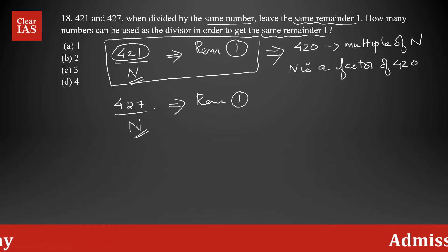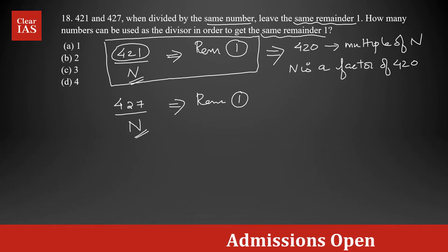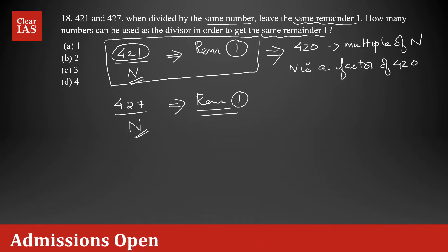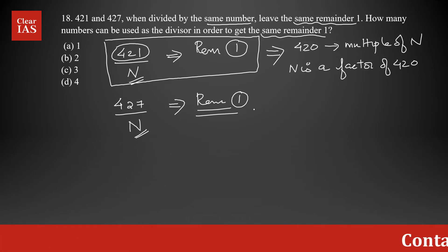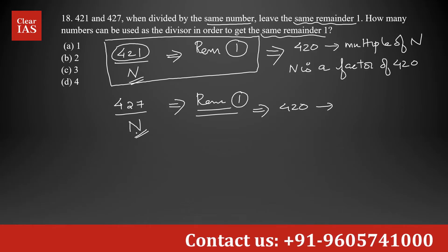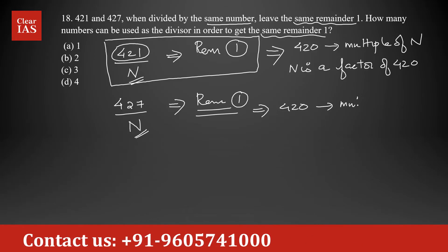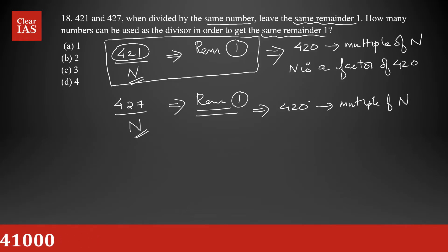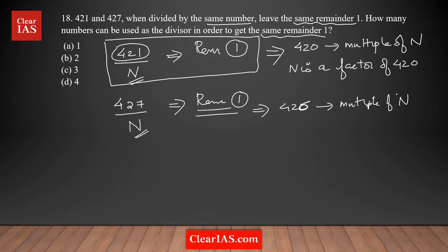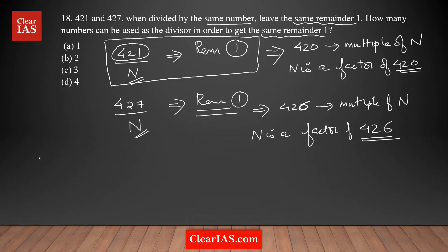Similarly, applying the same concept to the second case: 427 divided by n with remainder one means 427 minus 1, which is 426, is exactly divisible by n. So 426 is a multiple of n, meaning n is a factor of 426 as well. Since n is a factor of both, we can conclude that n is a common factor of 420 and 426.